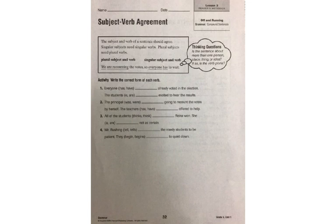What they mean by subject-verb agreement is that if a subject is plural, then the verb needs to be plural. Or if a subject is singular, then the verb needs to be singular. You can see in our example, it says we — for a plural subject — because that's more than one, and the plural verb is are recounting. If it were singular, it would say we is recounting, and you can tell that doesn't make sense. So if it's singular, it would be is, but because it's plural, it's are recounting instead of is recounting. That's what we mean by subject-verb agreement.